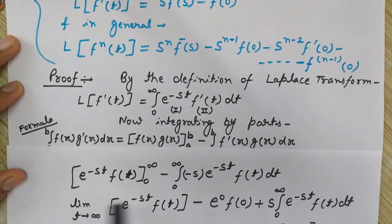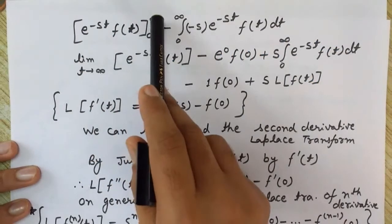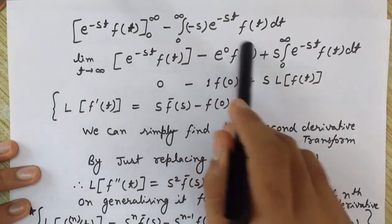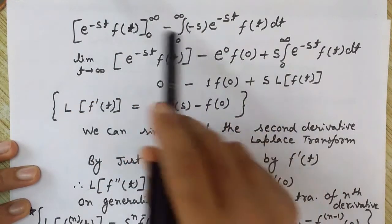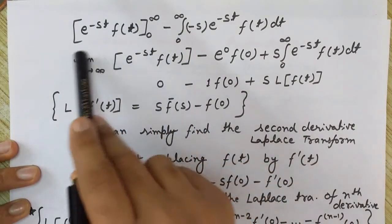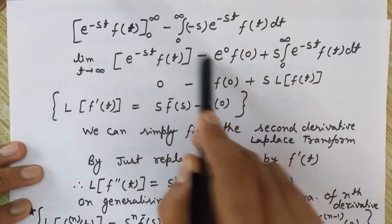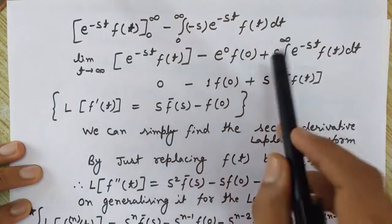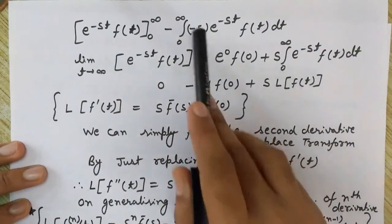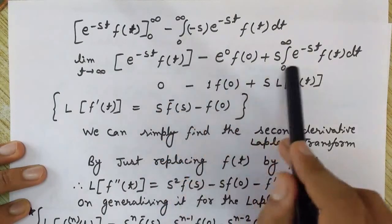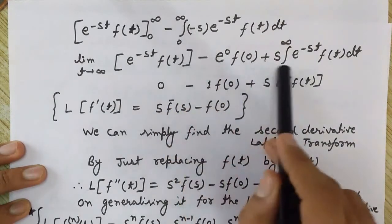Now we solve this by putting the upper limit and lower limit at the place of t. So e^(−st) · f(t) with t tending to infinity, minus the lower limit — e^0 · f(0). The minus and minus from the second term become plus, so it is just plus s times the remaining integral expression.